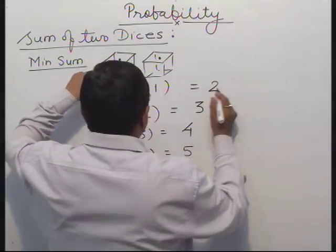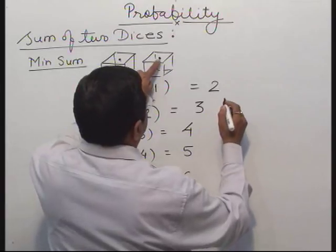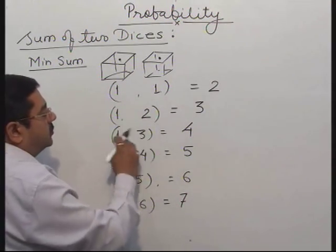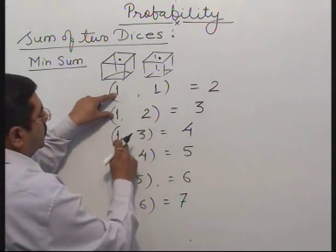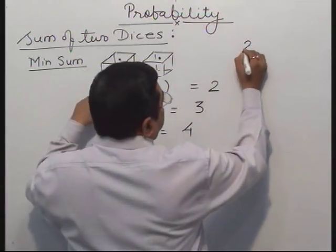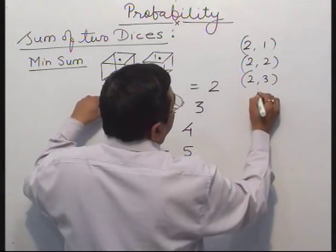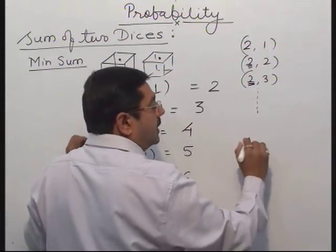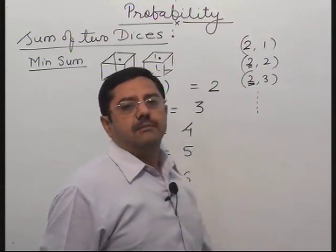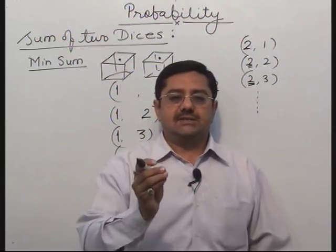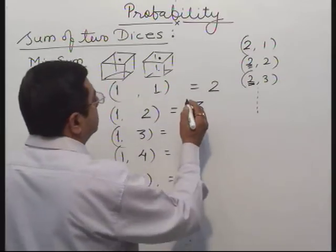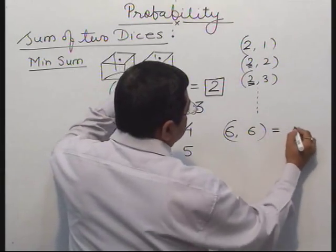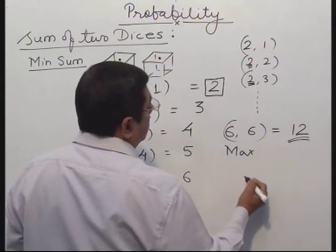If the first die is fixed at 1, then the second die varies. This is called the sample space. The pairs are: (1,1), (1,2), (1,3), (1,4), (1,5), (1,6), then (2,1), (2,2), (2,3), (2,4), (2,5), (2,6), then (3,1), (3,2) and so on up to (6,3). If you plot all these numbers, it is called the sample space. The minimum sum is 2 and the maximum sum is when first die shows 6 and second die also shows 6: 6 plus 6 equals 12. This is the maximum possible sum with 2 dice.